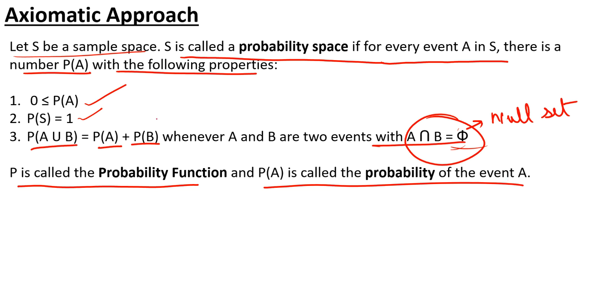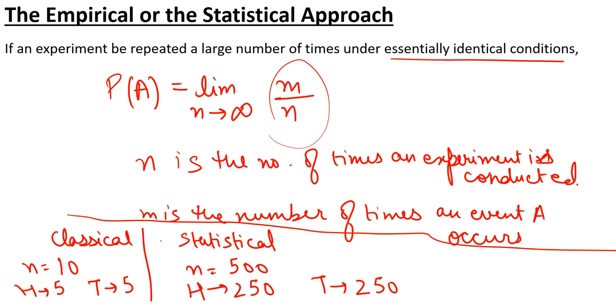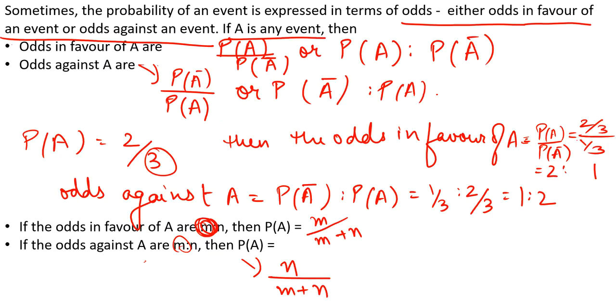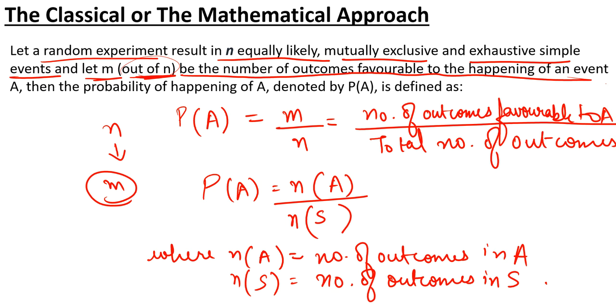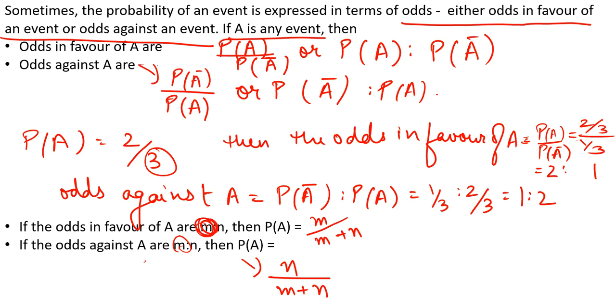Generally, if these three conditions are satisfied, it is a probability space. The axiomatic approach is more from a theoretical point of view. The empirical approach is used when trials are quite large — when n tends to infinity. The classical approach is used in general terms and is the most important for business statistics exams, as most questions use it. I hope you liked this video. Do subscribe to this channel for more videos. Thank you.